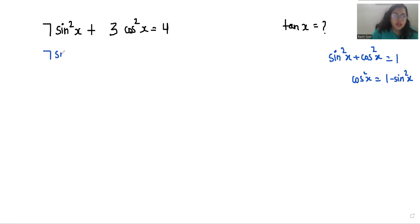So here, for 7 sin²x + 3 cos²x, I can write cos²x as 1 - sin²x, giving us 7 sin²x + 3(1 - sin²x) = 4.